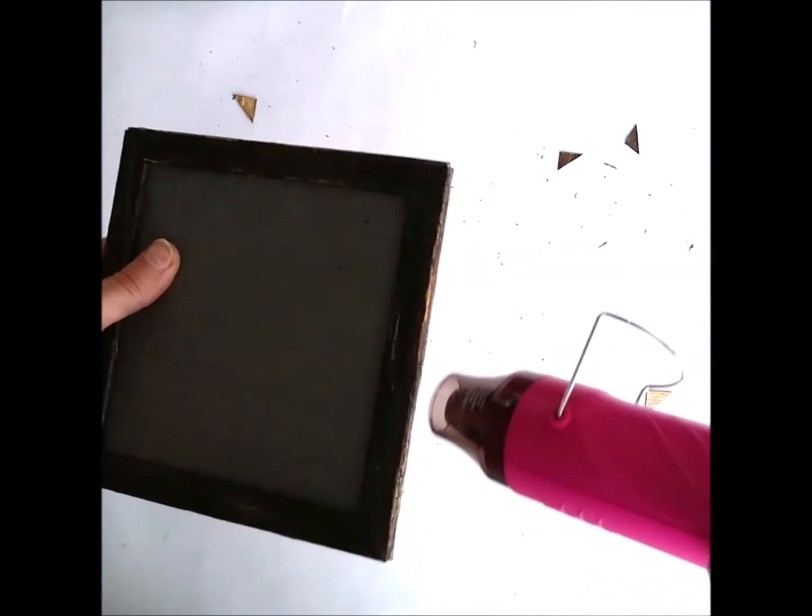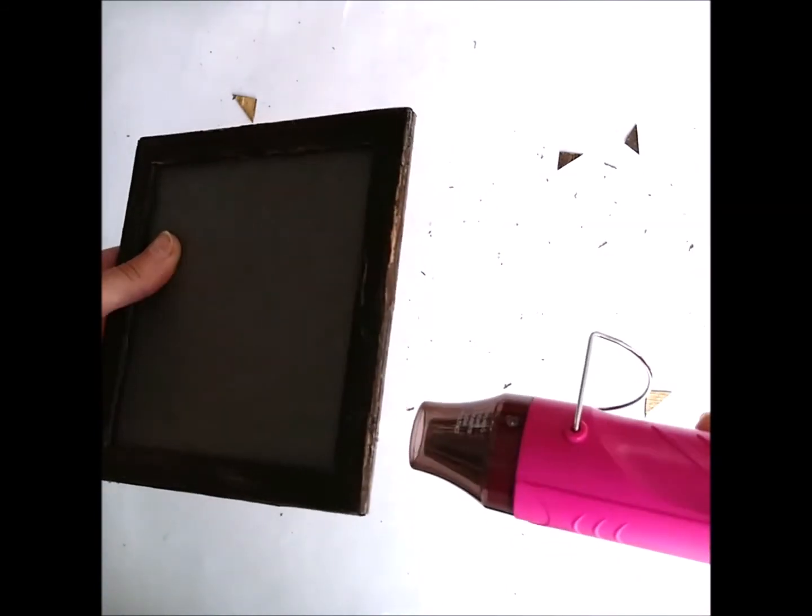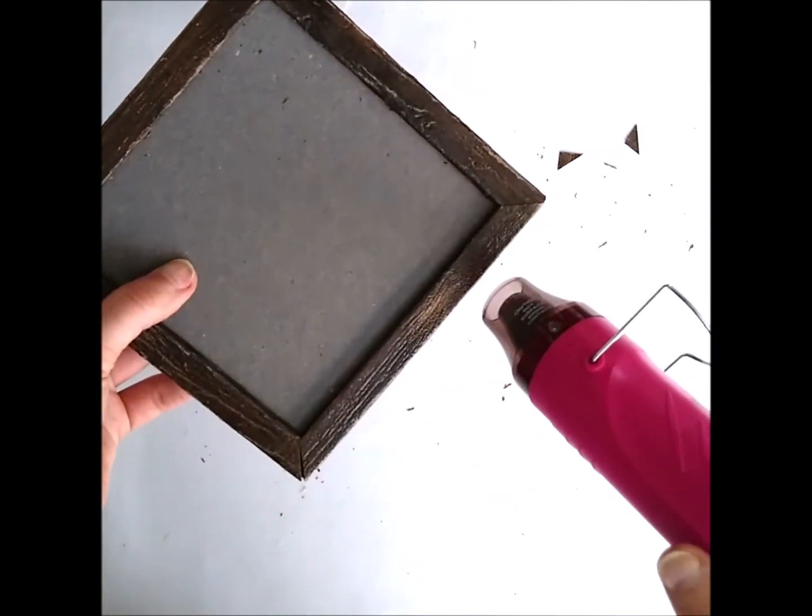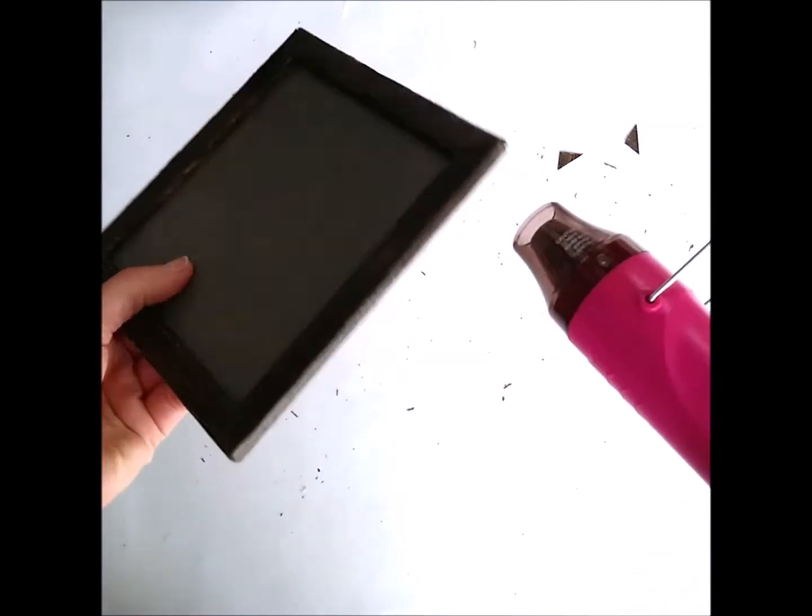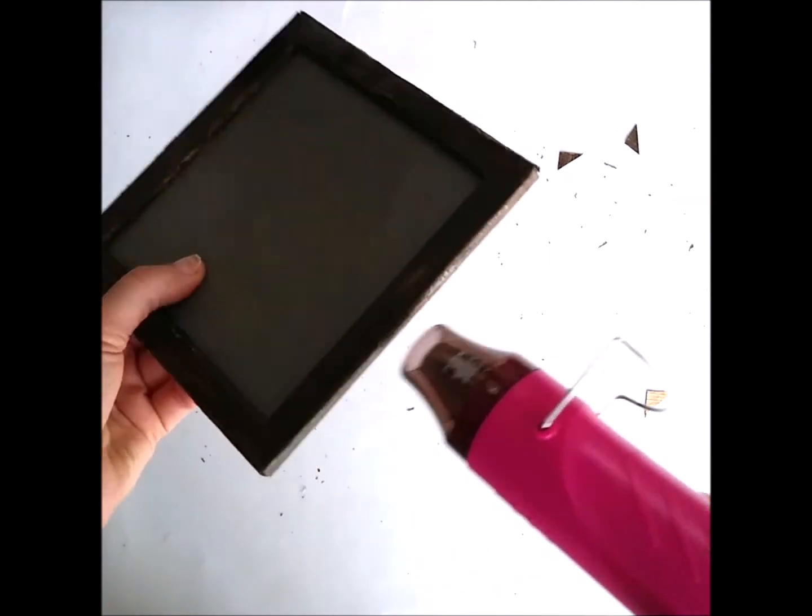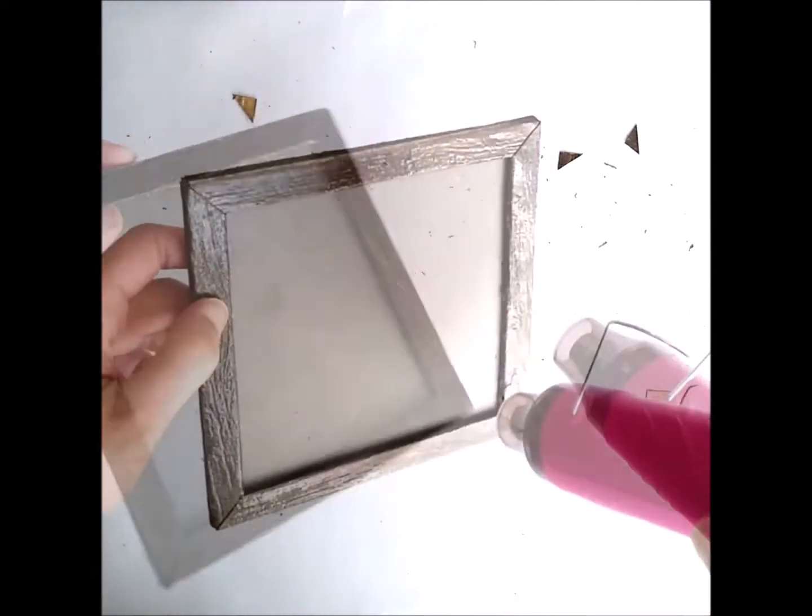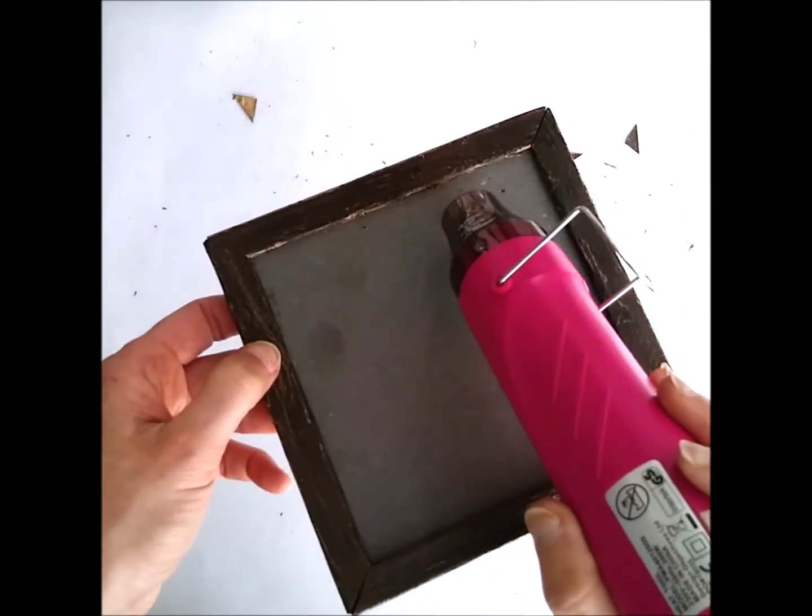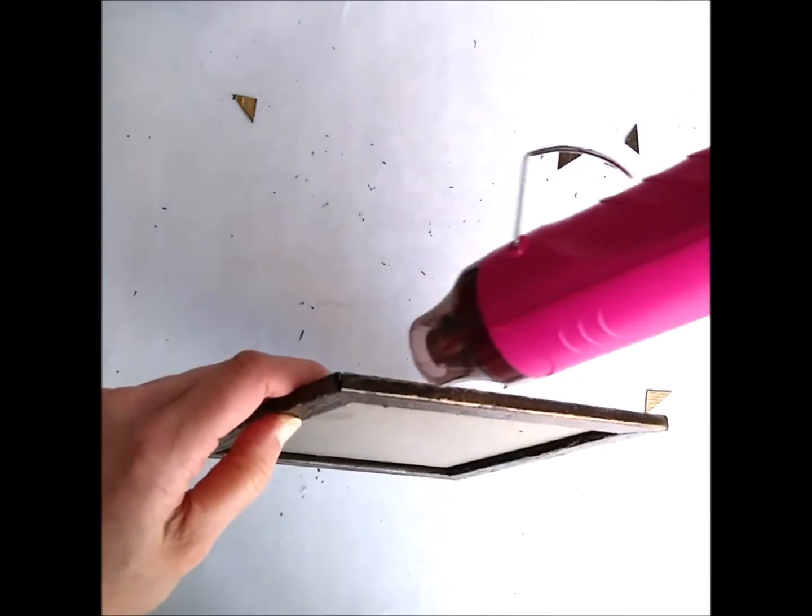So you can see I'm going with the heat gun all around the frame, every part that was folded, so from the inside, the outside, the back, everywhere. And this smooths up the glaze, and it also prevents it from flaking again afterwards.